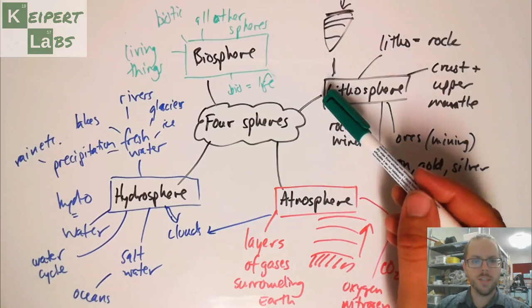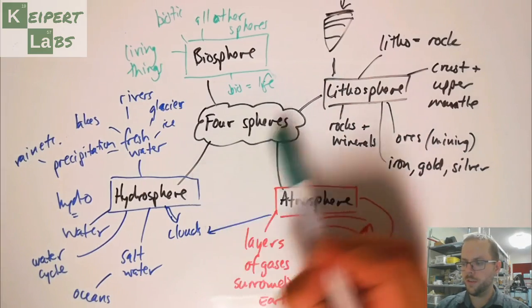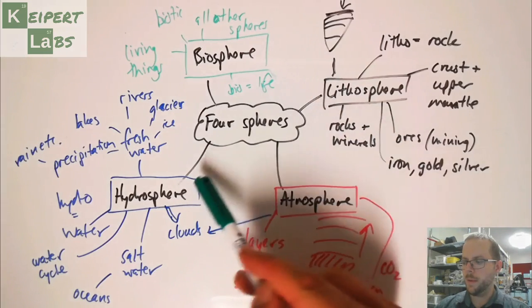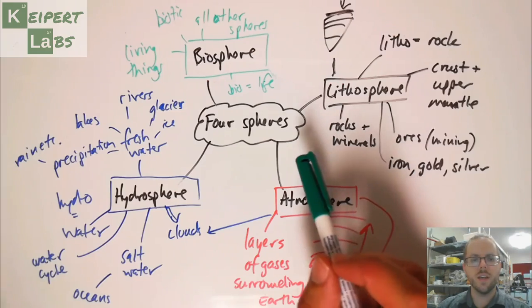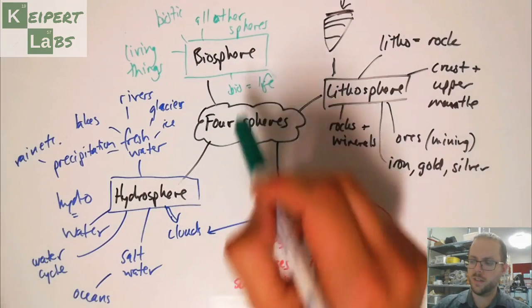Maybe the lava that erupts actually heads down into the ocean and changes things in the ocean. And then maybe it makes new rock and that sort of thing. So you can see that these sorts of events are connected and connect the spheres together.